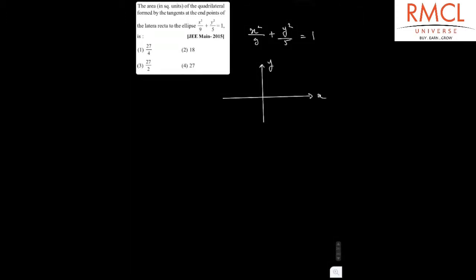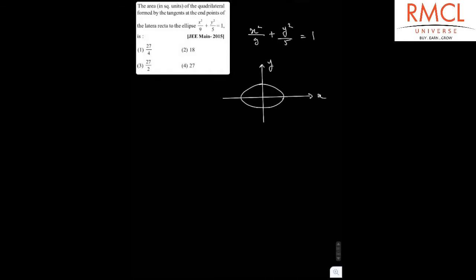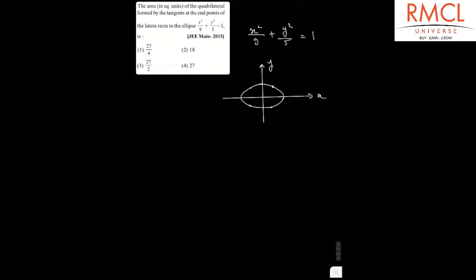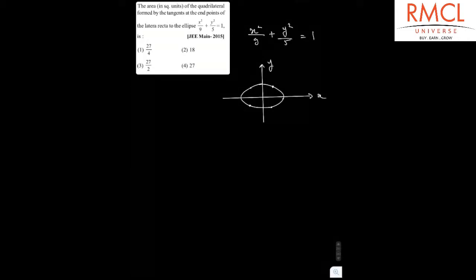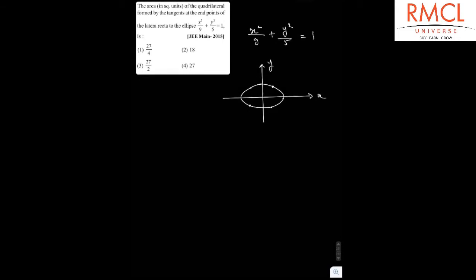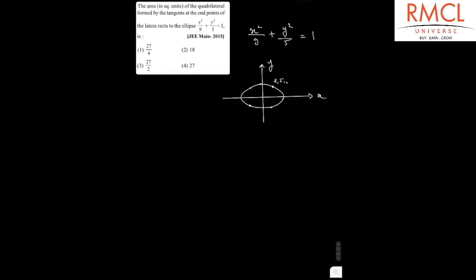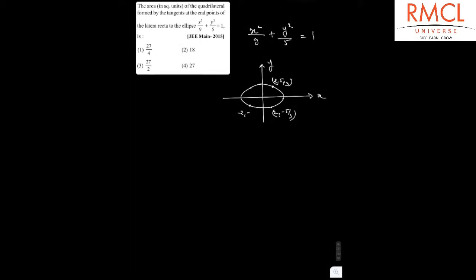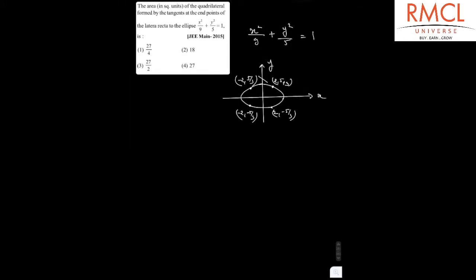So suppose this is the ellipse, this is the y-axis and this is the x-axis. The endpoints of the latus rectum will be (2, 5/3), (2, -5/3), and (-2, 5/3).